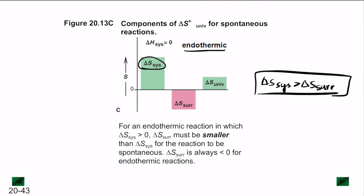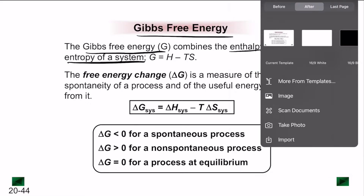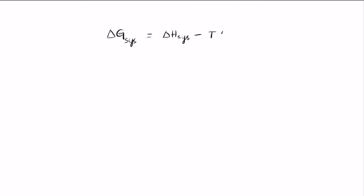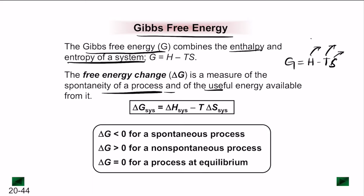Next, let's talk about Gibbs free energy. Gibbs free energy is the one quantity that can combine both enthalpy and entropy of the system, given by G equals H minus TS, where H represents enthalpy, S represents entropy, and T represents the absolute temperature. The free energy change is given by delta G of the system equals delta H of the system minus T times delta S of the system. It's a measure of the spontaneity of a process and the useful energy available from it.